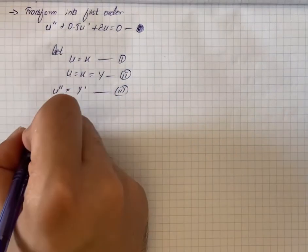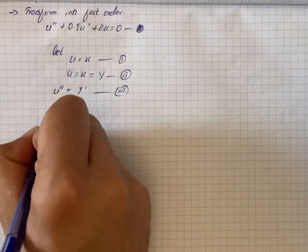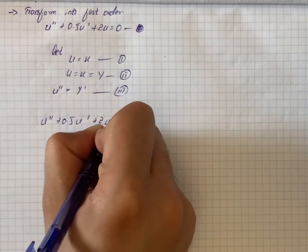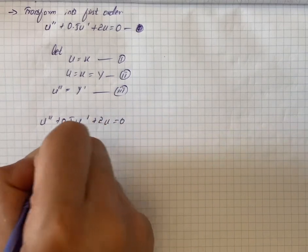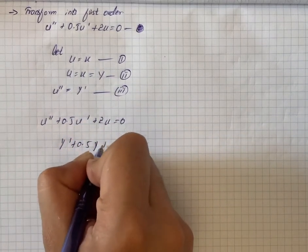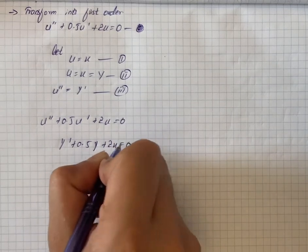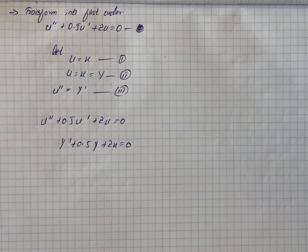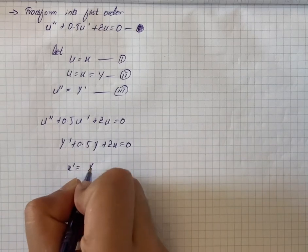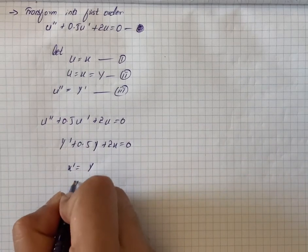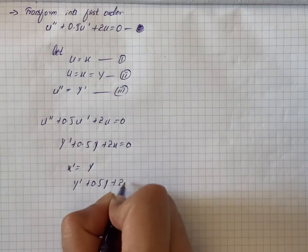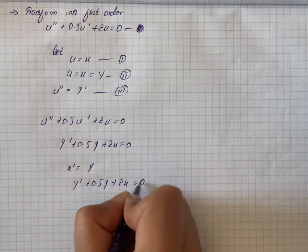From equations one, two, and three, substituting into the differential equation gives us: u'' + 0.5u' + 2u = 0, which becomes y' + 0.5y + 2x = 0. The system of first-order differential equations is therefore: x' = y, and y' + 0.5y + 2x = 0.